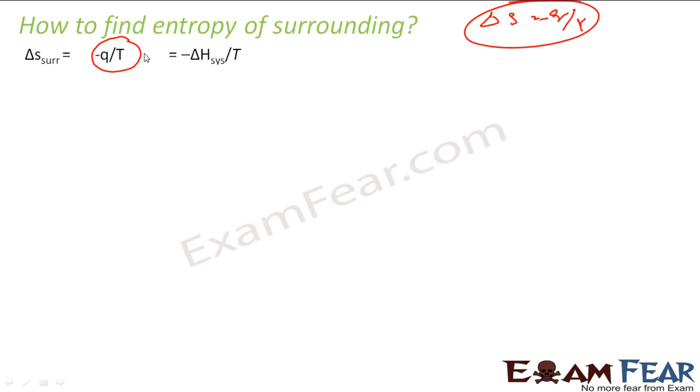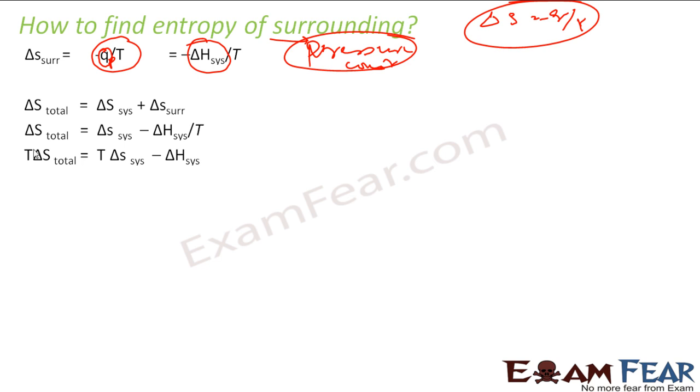So with that, if we can find the entropy of surrounding, and this Q is nothing but change in enthalpy of the system, because we are talking at constant pressure always. In real life we use constant pressure. So Q at constant pressure will be change in enthalpy of the system. So with this, if you see, S total will be S system plus S surrounding. That is, S total is S system. S surrounding is nothing but minus delta H system by T. Multiply everything with T, you get T delta S total is this value.